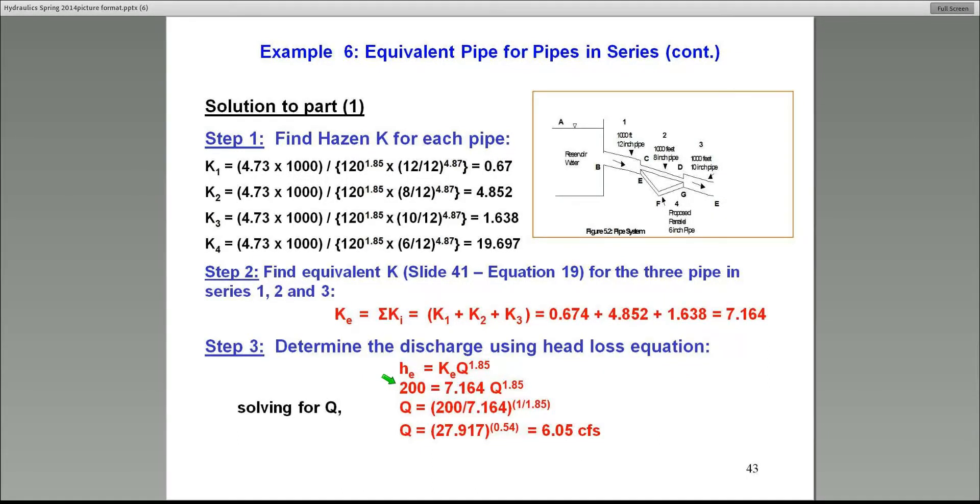To solve for the flow, we simply use this equation. The head loss is equal to KE Q to the power 1.85, which is the equation I showed you earlier for friction loss. Invert that equation to solve for Q. In this case, it comes out to be 6.05 CFS. It's easy to calculate the flow rate given that head loss of 200 feet.